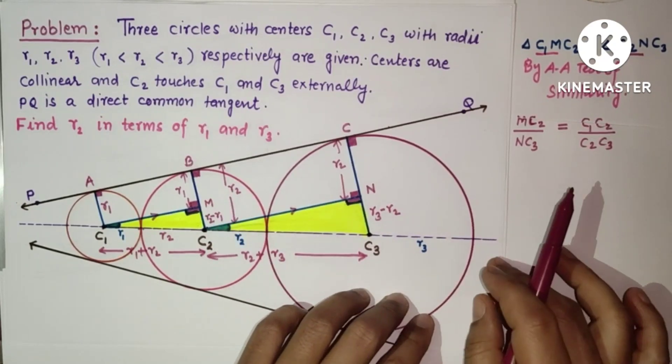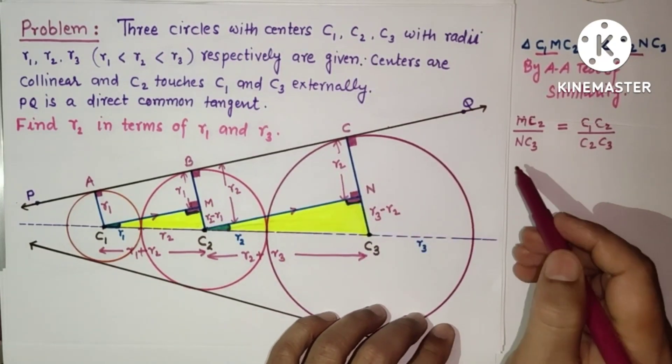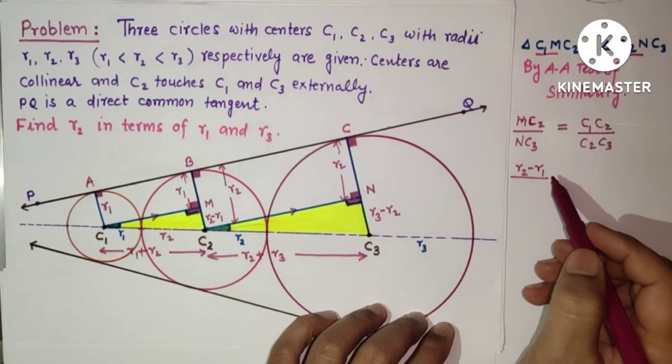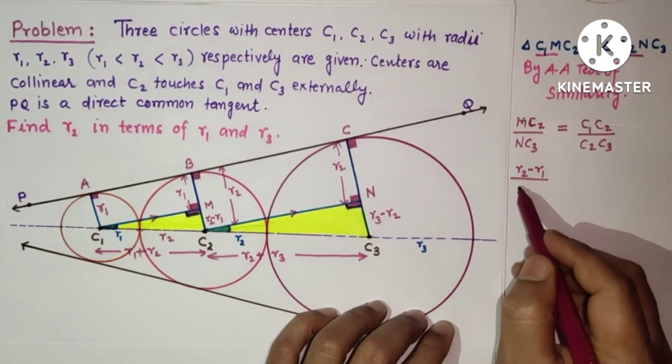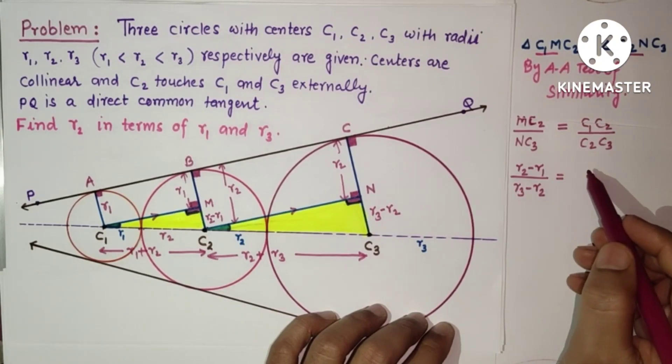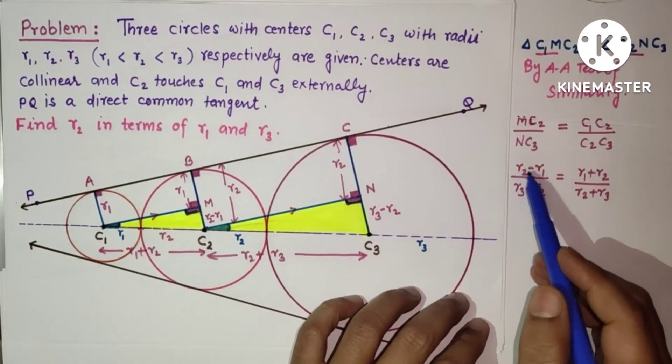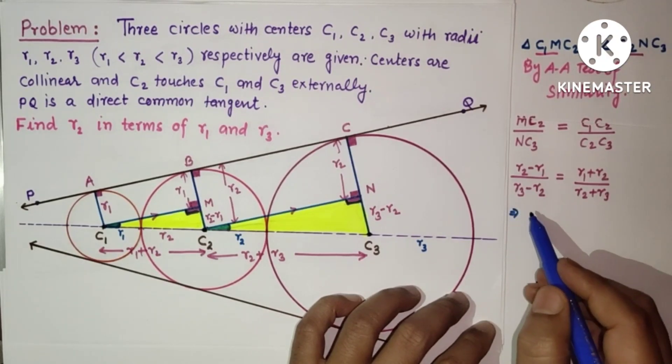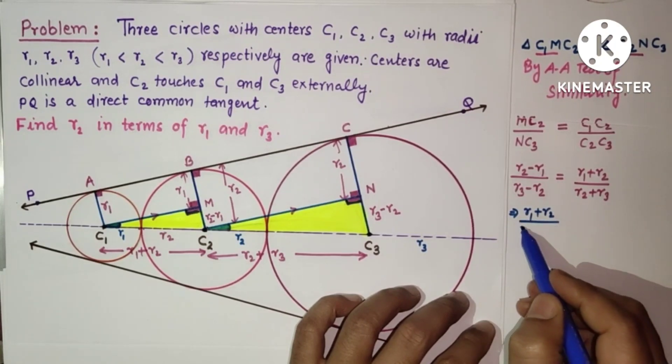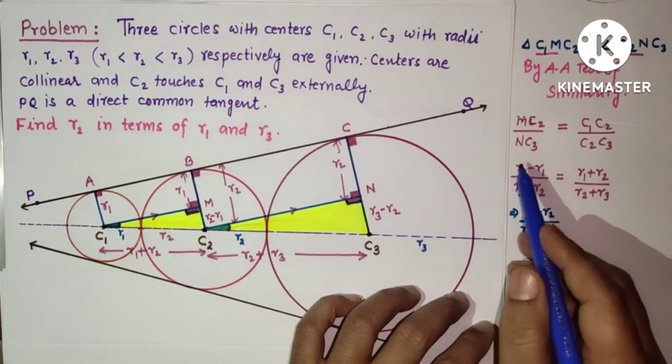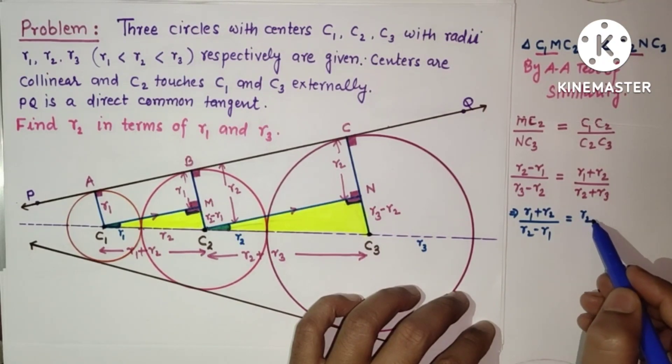So we will be substituting these facts here. We will write R2 minus R1 upon NC3, and NC3 is R3 minus R2, is equal to C1C2 is R1 plus R2, and C2C3 is R2 plus R3. We can rewrite it as R1 plus R2 upon R2 minus R1, taking this to the right-hand side, and this we will take to the left-hand side, so it will be R2 plus R3 upon R3 minus R2.